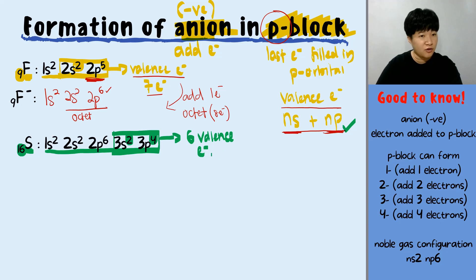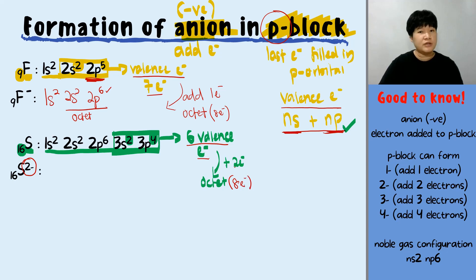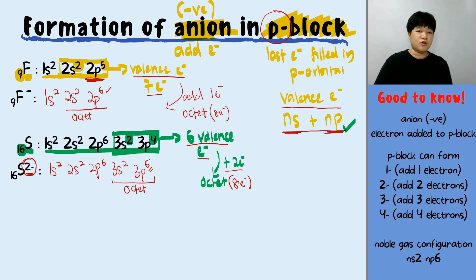From 6 valence electrons, to achieve octet we need to add 2 more electrons. Adding 2 electrons makes sulfur a 2- ion. The electrons go into the last orbital — 3s2 remains, but 3p4 becomes 3p6, adding 2 electrons to achieve octet. The valence electron count changes from 6 to 8.